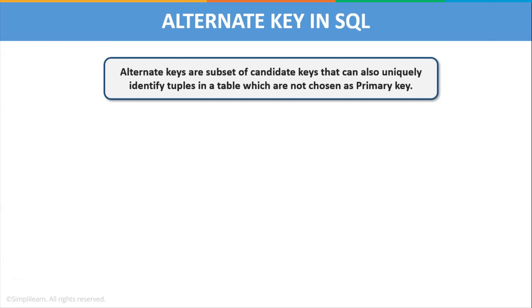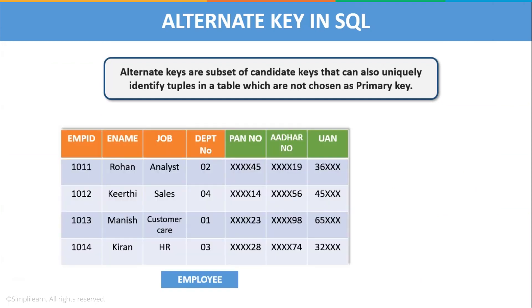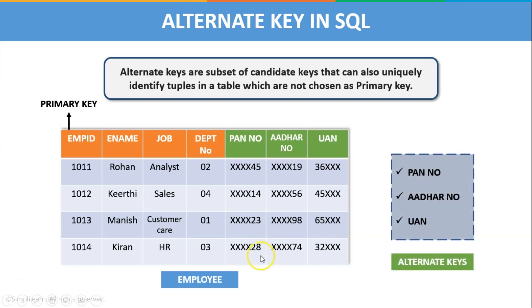Next, let us discuss about alternate key in SQL. Alternate keys are a subset of candidate keys that can also uniquely identify tuples in a table, but which are not chosen as the primary key. For example, consider the employee table with columns: employee ID, employee name, job, department number, PAN number, Aadhaar number, and UAN. The columns that can uniquely identify each record are employee ID, PAN number, Aadhaar number, and UAN number. Since employee ID is taken as the primary key, the remaining columns not chosen as primary key are considered alternate keys — in this case, PAN number, Aadhaar number, and UAN number.